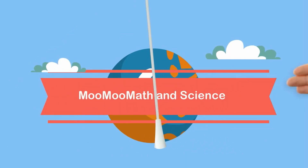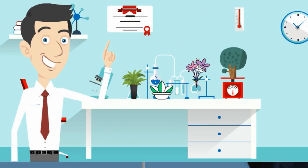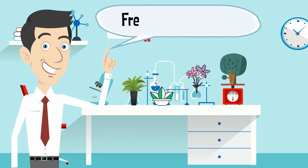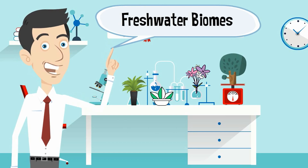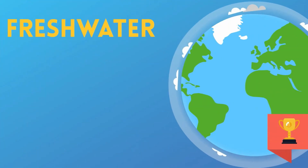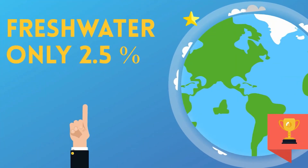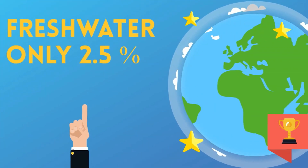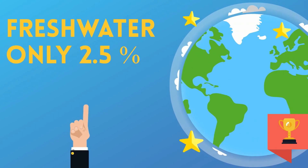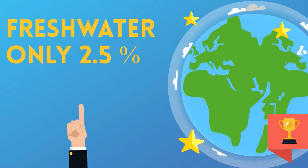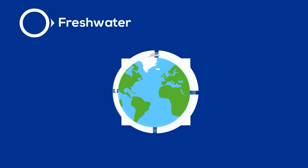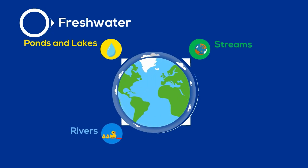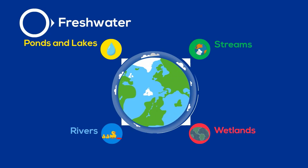Welcome to MooMooMath and Science. In this video I'd like to talk about freshwater biomes. The earth has lots of water but only 2.5% is freshwater. The major freshwater biomes include ponds, lakes, streams, rivers, and wetlands.